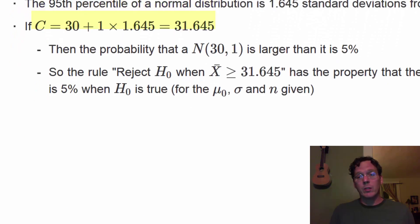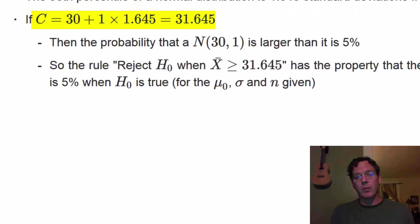So in this case it's 30, the hypothesized mean under the null hypothesis, plus 1, the standard error of the mean, times 1.645, the number of standard deviations from the mean that we're considering, which in this case works out to be 31.645.